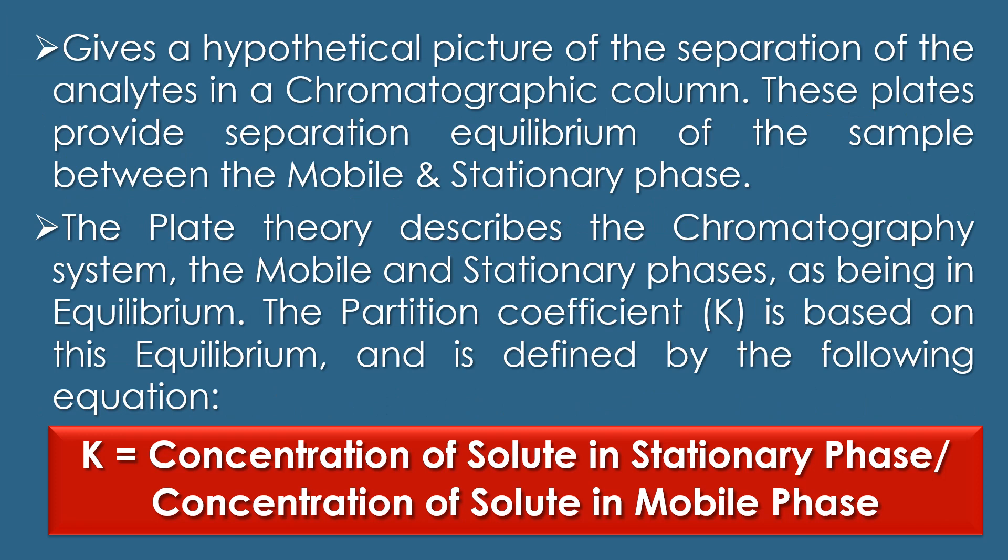Unlike the rate theory, the plate theory of chromatography gives a hypothetical picture of the separation of analytes in a chromatographic column. These plates provide separation equilibrium of the sample between the mobile phase and stationary phase. As the mobile phase passes through the stationary phase in a column, the analytes are distributed between the two phases, establishing an equilibrium. Once equilibrium is obtained, the solute from the mobile phase is carried from one plate to another and continues until it is eluted out of the column. The nature and solute type determine the retention time and peak width.